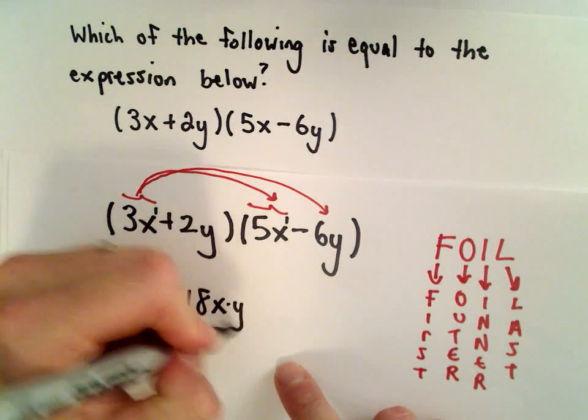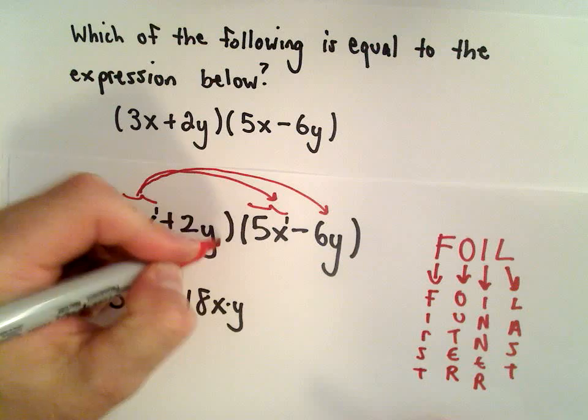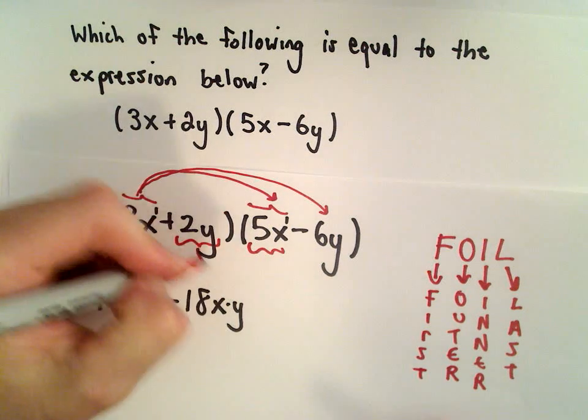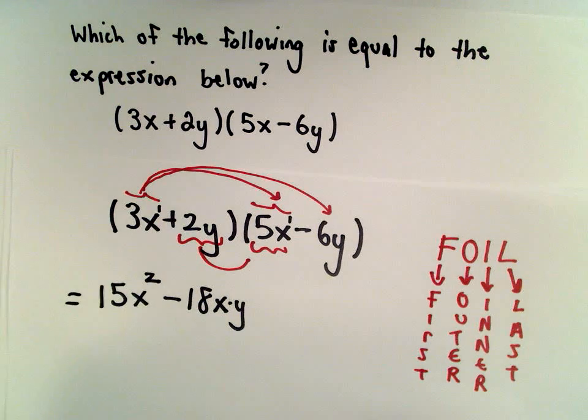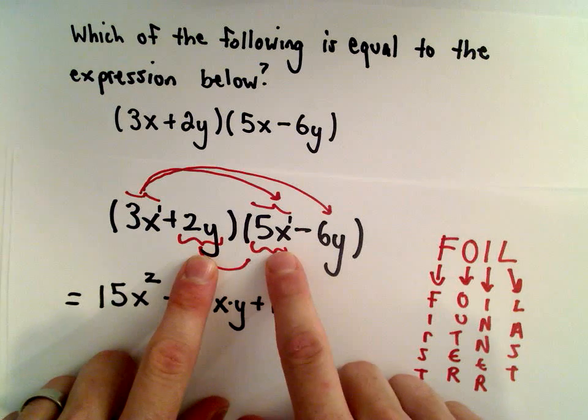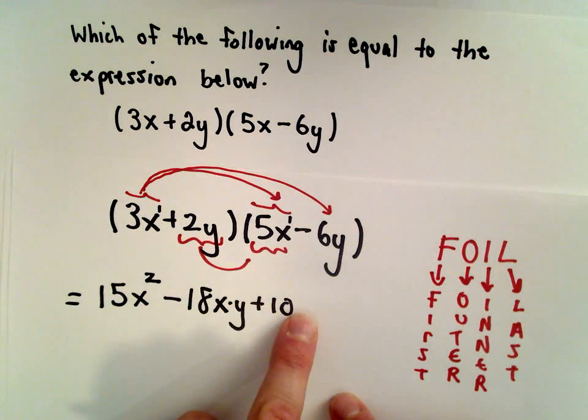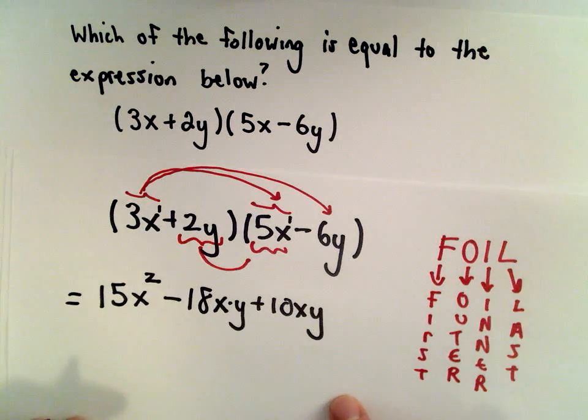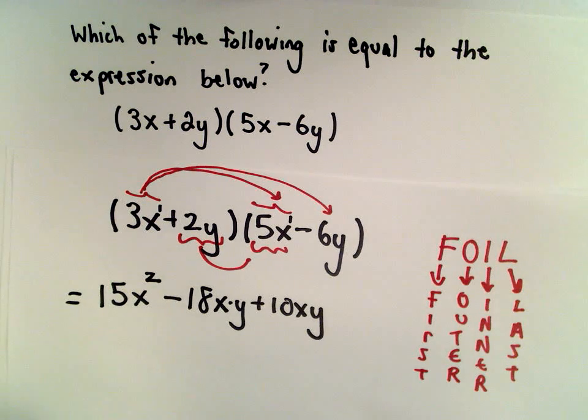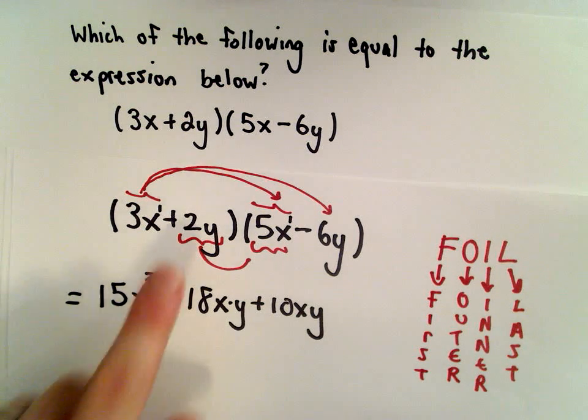I stands for inner, the two that are closest together. We've got 2y and 5x, so positive 2 and positive 5 is positive 10. Y times x, I always alphabetize, so I'll write that as 10xy. That way I see these as being like terms.